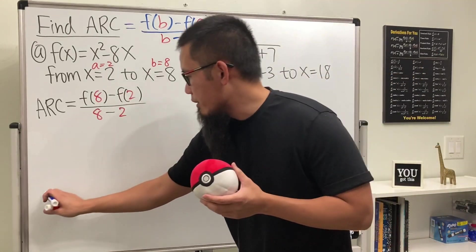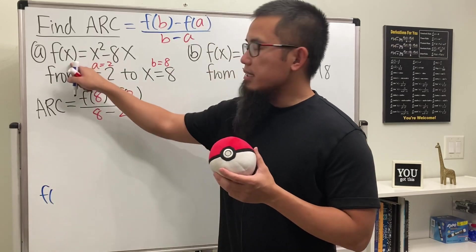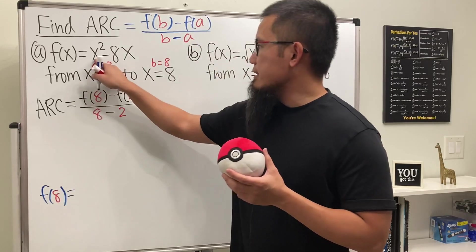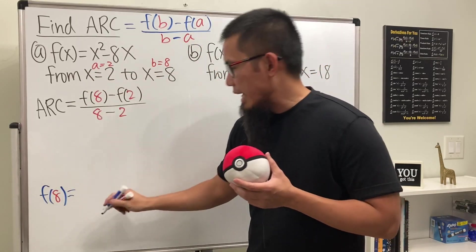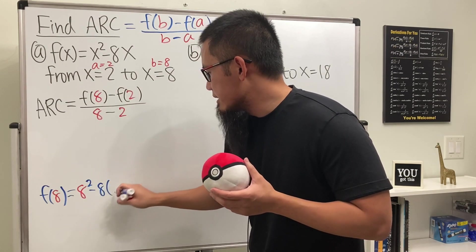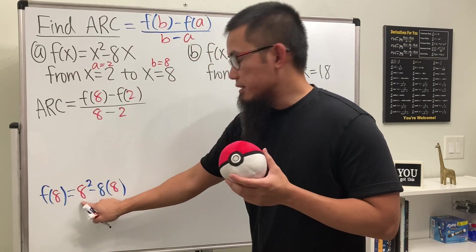This is our function. To get f of 8, we will just have to plug in 8 into the x here and also the x here. So we get 8 squared minus 8 times 8. This is 64, this is also 64, and when you subtract you get zero.